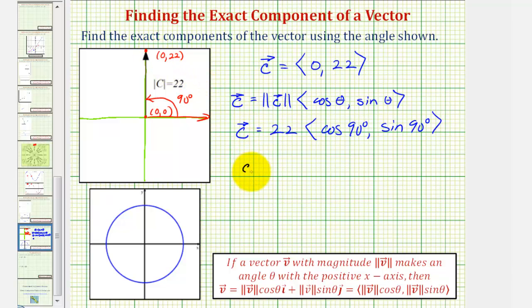So this would give us vector C equals 22 times a unit vector with an x component of zero and a y component of one. Performing the scalar multiplication gives us the same result. Vector C has an x component of zero and a y component of 22.